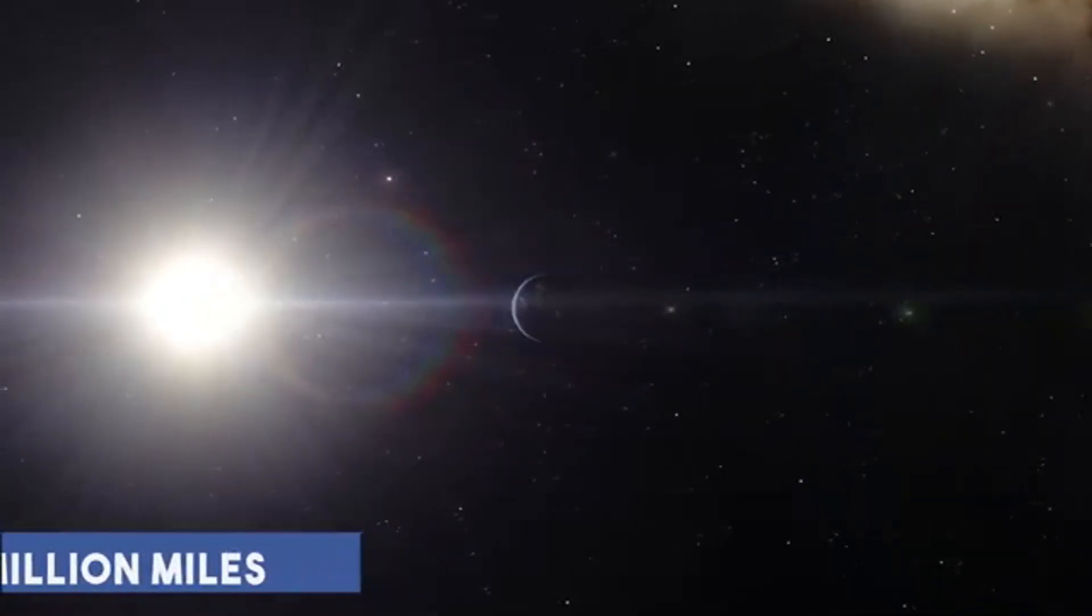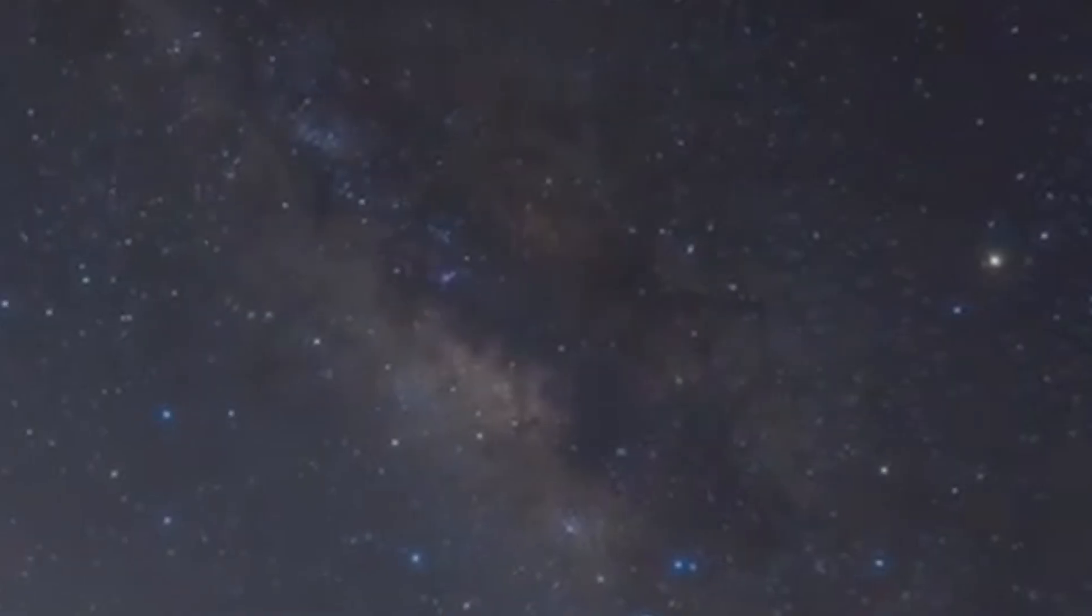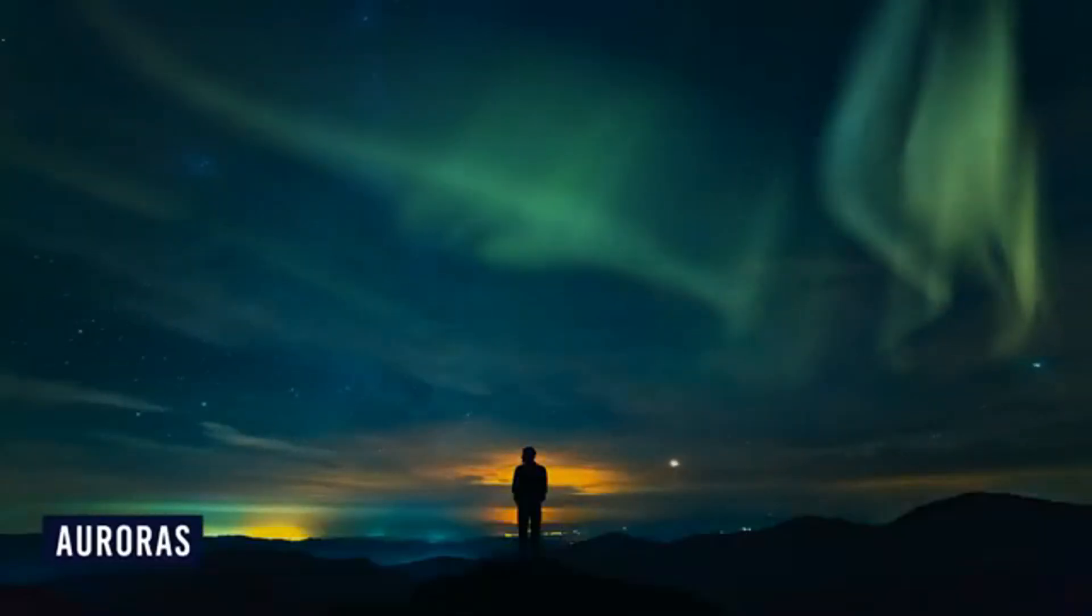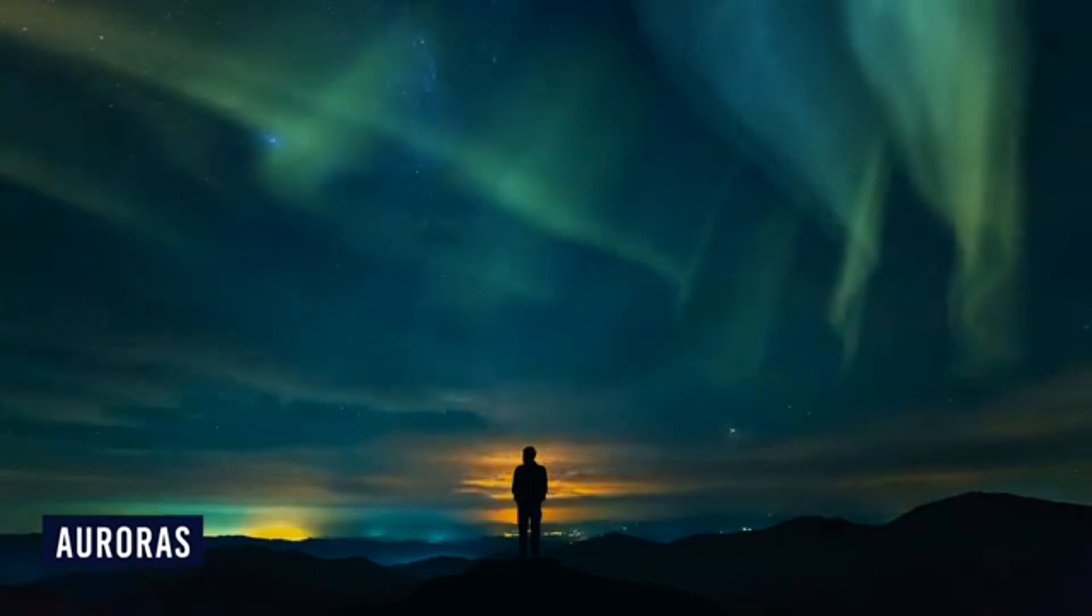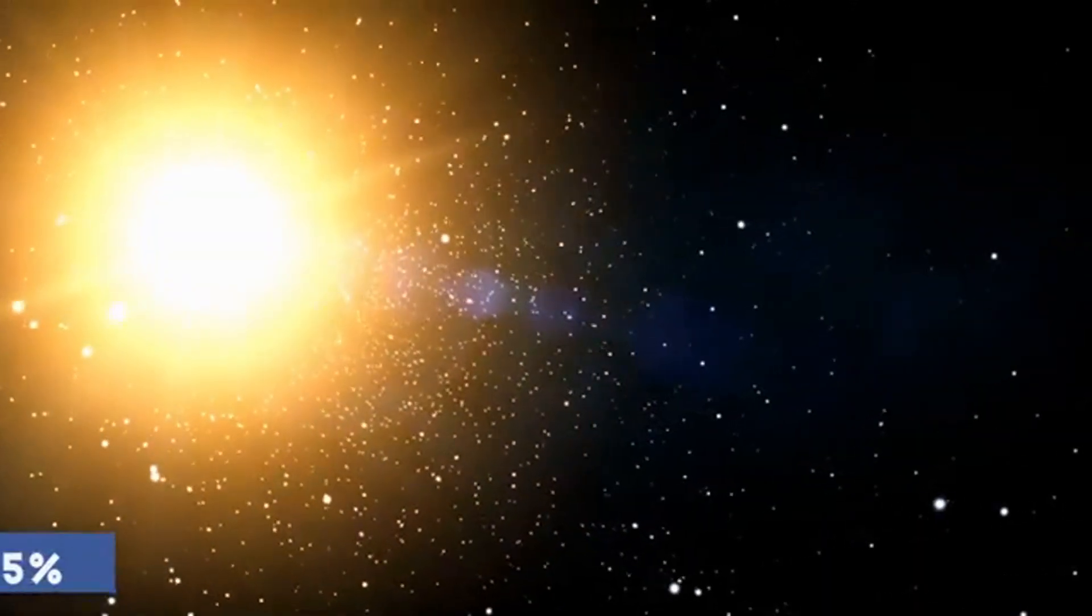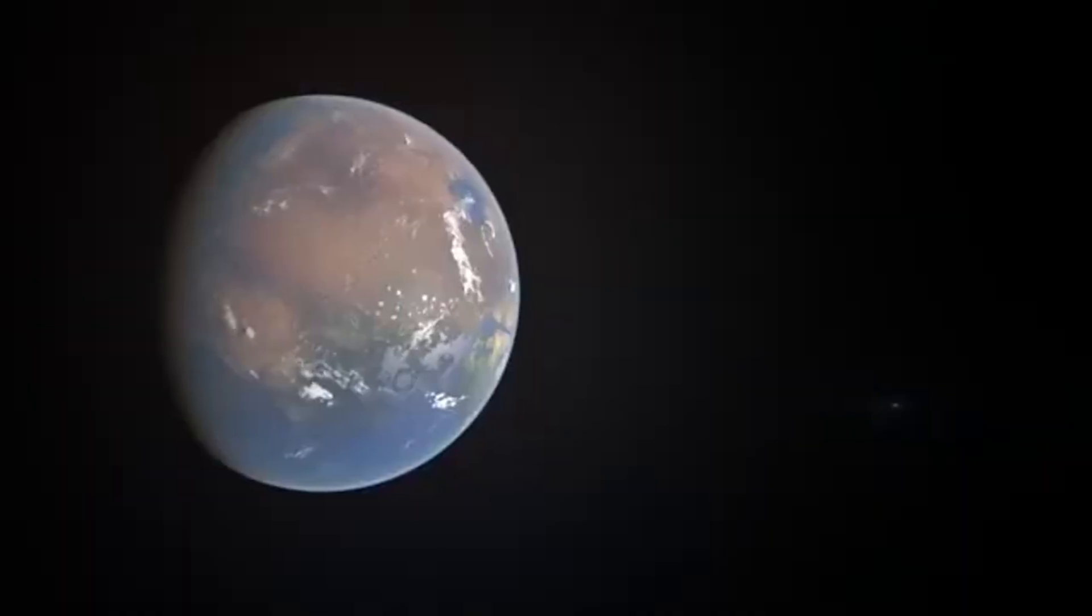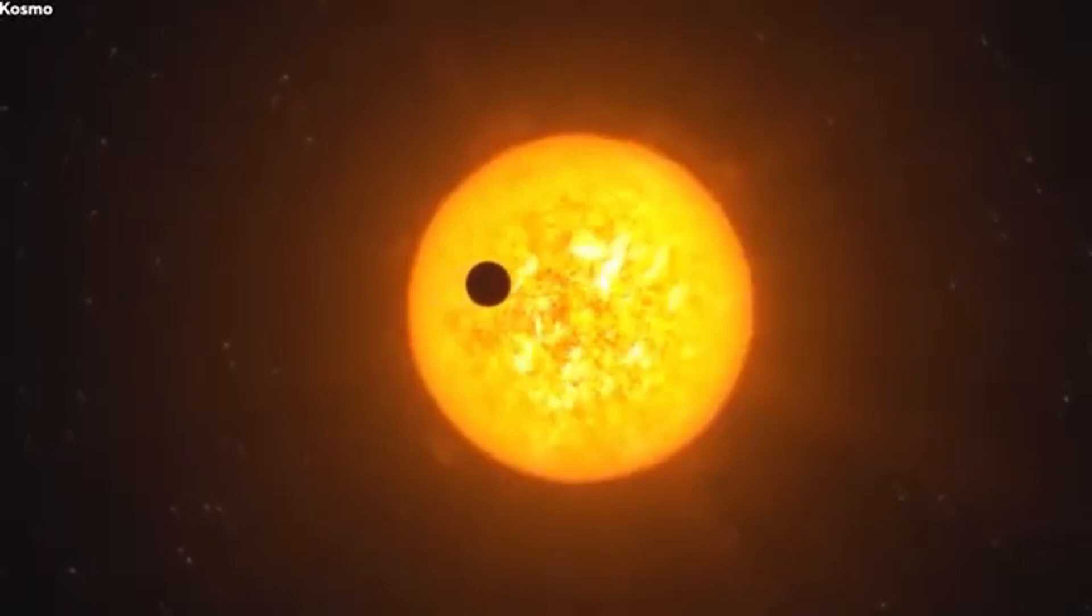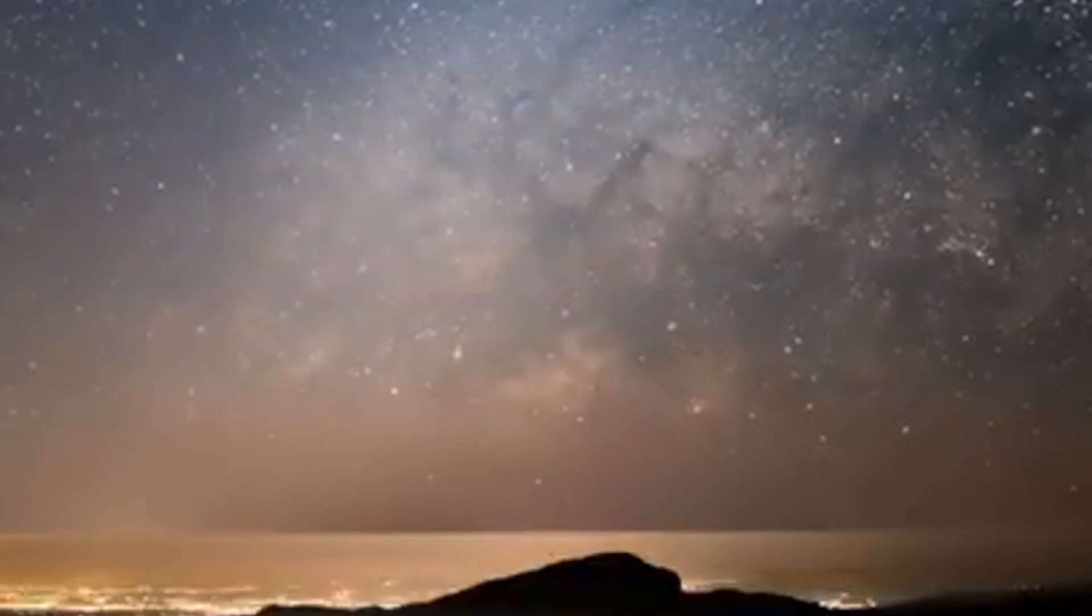Earth itself has undergone immense transformations over its 4 billion year history, evolving from primordial beginnings to the thriving ecosystem we know today. Its magnetic field shields life from solar winds and creates the mesmerizing auroras that adorn polar skies. Yet Earth's history has erased traces of its origins, leaving behind clues like stromatolites, ancient fossils hinting at life's earliest forms. The gradual transformation of Earth's atmosphere from carbon dioxide to nitrogen and oxygen has been instrumental in fostering life's evolution. These unique qualities have nurtured Earth's life over eons, prompting the question: are these conditions replicated elsewhere in the cosmos?